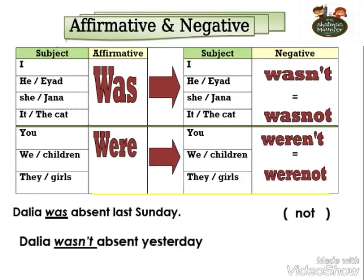طيب، دي جملة مثبت. طبعاً لو negative هقول يا wasn't أو weren't. يعني wasn't بالشورت فورم أو أقول was not. Weren't بالشورت فورم أو أقول were not. Okay, it's very easy!